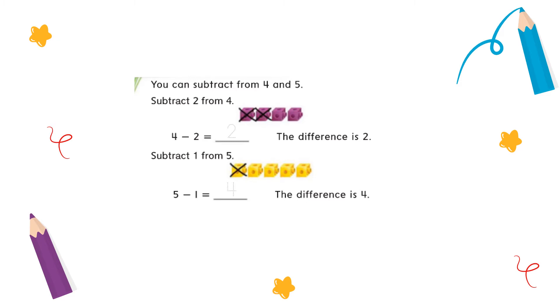Subtract 2 from 4. So we are going to subtract the big number from the small number. So 4, I have 4 purple cubes here. We crossed out 2, so the difference is 2.